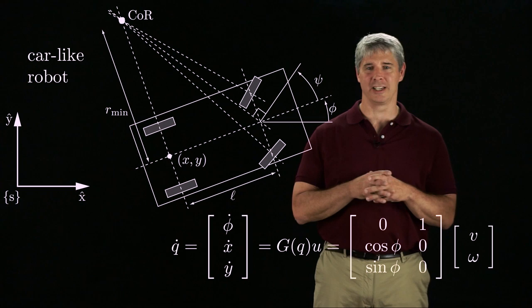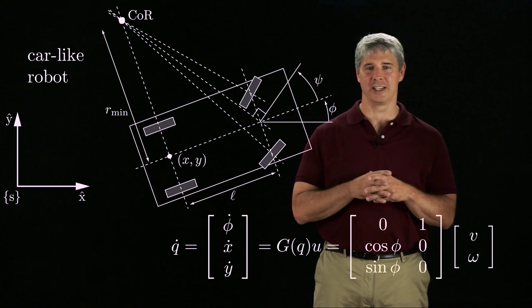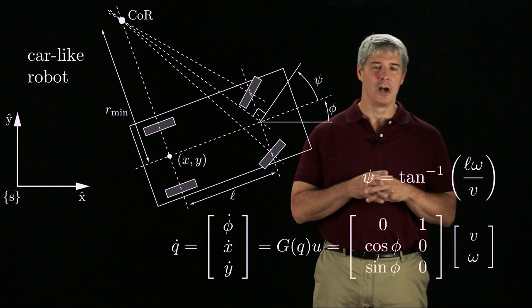As shown in the book, we can calculate the steering angle psi needed to generate the virtual control omega using this transformation, which is a function of both V and omega.